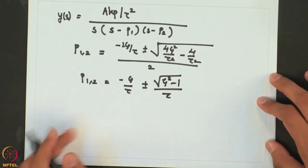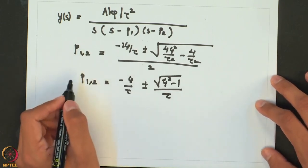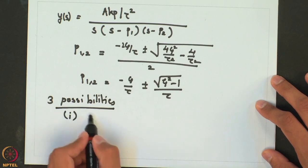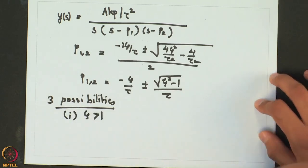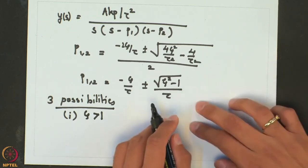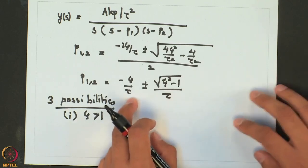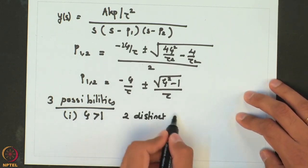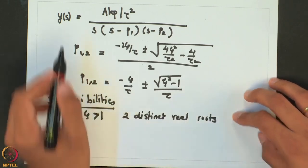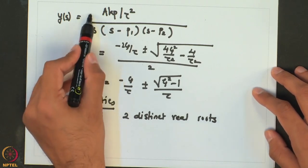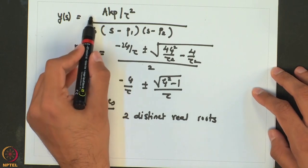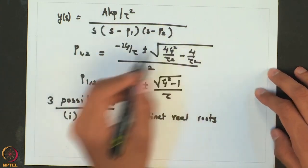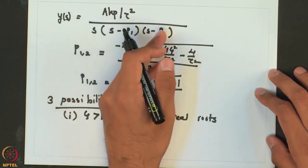So now we can see that we have three possibilities. Possibility one: if zeta is greater than 1, this square root term will be real and less than the first term, giving two distinct real roots. The partial fraction decomposition would then be A over S plus B over (S minus p1) plus C over (S minus p2), so there will be three different terms — one constant and two exponentials, e to the p1 t and e to the p2 t.